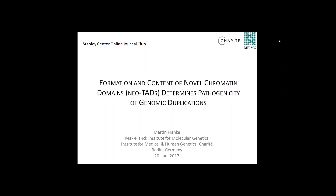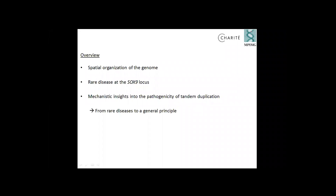My PhD project is about the formation of novel chromatin domains, or we call them NEOTADs. This concept helps us to understand the pathogenicity of genomic duplications. During my talk, I want to give you an overview about the spatial organization of the vertebrate and mammalian genome, then talk about the Sox9 locus and duplications associated with rare diseases there, and present mechanistic insights into the pathogenicity of those tandem duplications. At the end, I'll present our concept generated from studying these rare diseases, which I think we can apply on a more global basis.